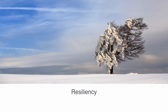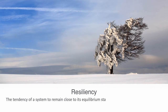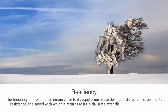Ecological systems and societies are dynamic entities; invariably they are subject to periodic disturbances and are in the process of recovering from some past disturbance. When a system is subject to some sort of perturbation or disturbance, it responds by moving away from its initial state. The tendency of the system to remain close to its equilibrium state despite that disturbance is termed its resistance. On the other hand, the speed with which it returns to its initial state after disturbance may be understood as its resilience.